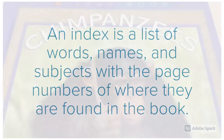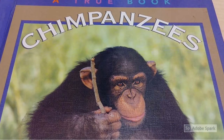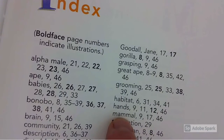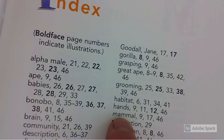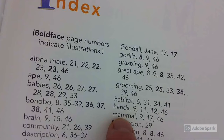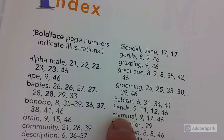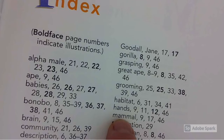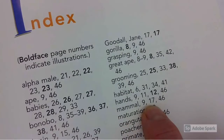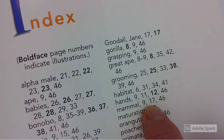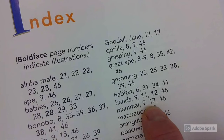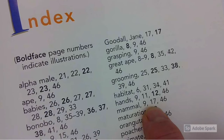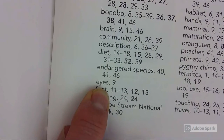Let's find an example of it in this book about chimpanzees. One part is a word that is commonly found throughout the book, or it might be a word that people want to study more about. Next to it are these numbers — these numbers are the page numbers that that word can be found on.